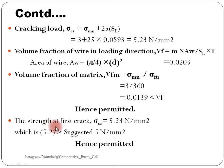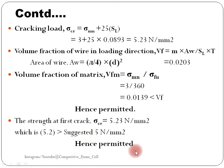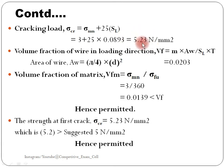The strength at first crack, sigma cr, is equal to 5.23 N/mm², as calculated. This value of 5.23 N/mm² is greater than the suggested 5 N/mm². Since our calculated strength exceeds the suggested value, the design is hence permitted.